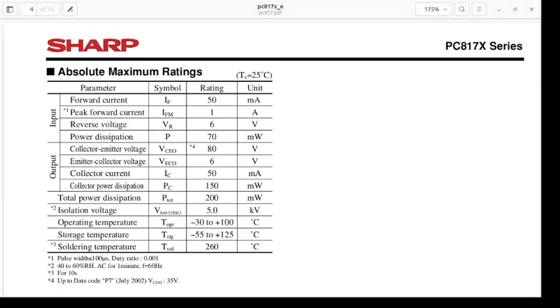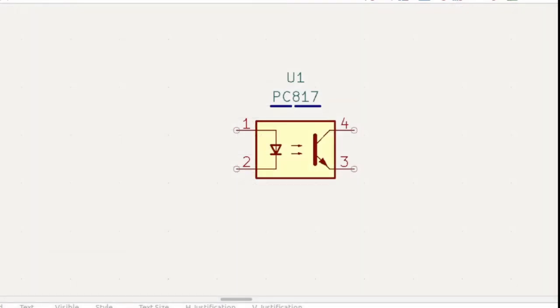We have to calculate the same thing for our output. Remember that we cannot use higher than 80 volts and 50 milliamps. When you design your network, when you design this SMPS circuit or isolation circuit, then you have to use this data for your better performance.